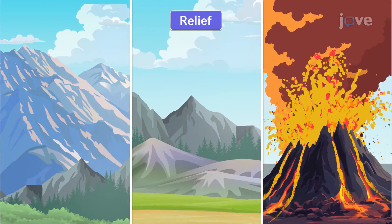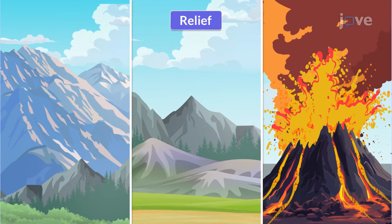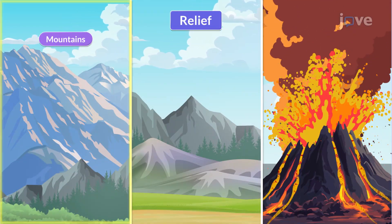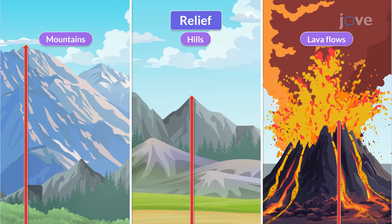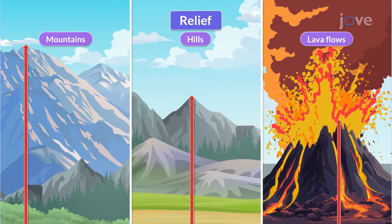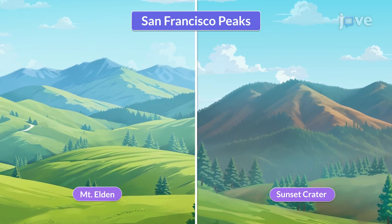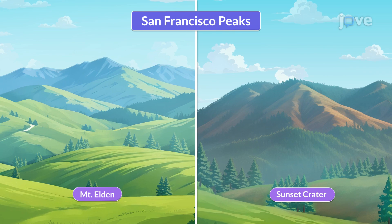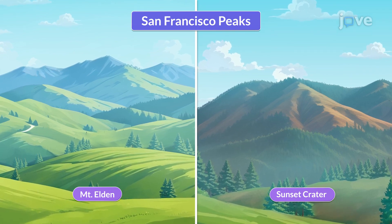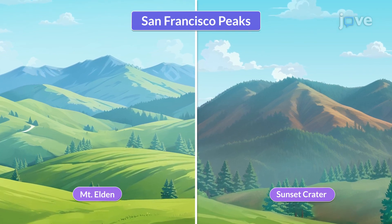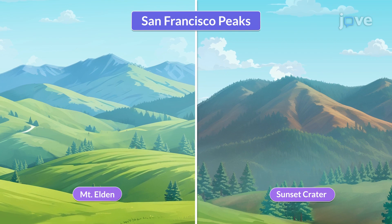Relief includes all the landforms around us, like mountains, hills, and lava flows, based on differences in elevation. An example of this is the San Francisco Peaks in Arizona, where steep and dramatic elevation changes beautifully showcase the concept of relief.